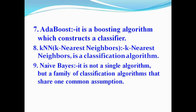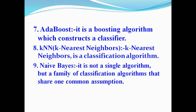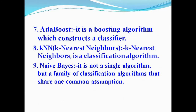Naive Bayes is not a single algorithm — it is a family of classification algorithms. KNN, AdaBoost, and K-Means are all classification algorithms. They share one common assumption, and together this family of classification algorithms is called Naive Bayes.